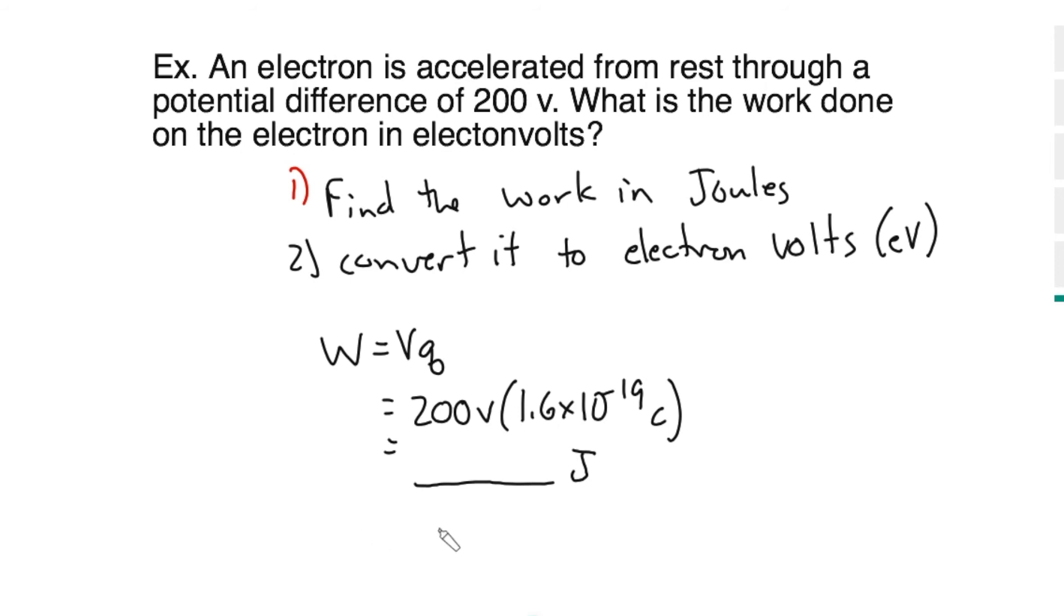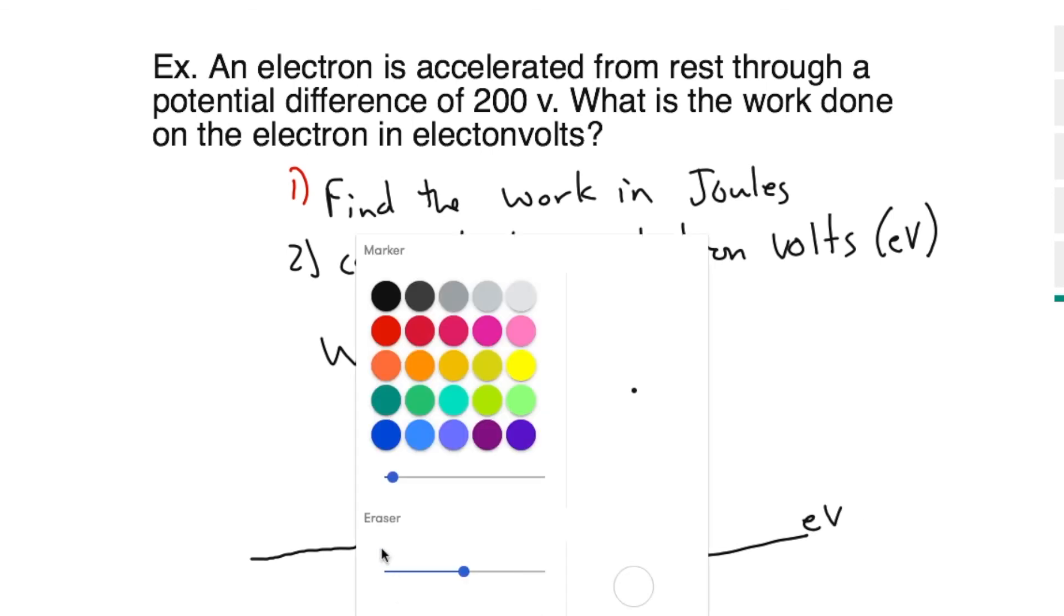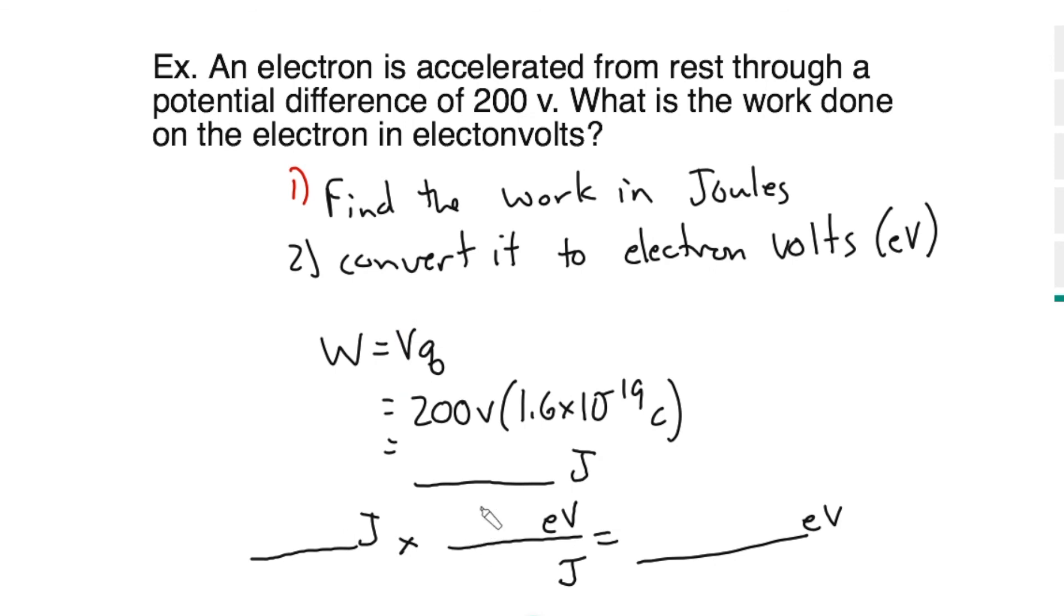Now, when you come through, now that you've solved for that work in Joules, and you're going to put your answer in Joules here that you just got, then to convert, we put Joules down here, eV up here, and then we'll get some answer in eV. Now, what that allows me to do, if I put in the factor of 1 eV equals 1.6 times 10 to the minus 19th, I then could cross these out, and I'll get my answer in eV.